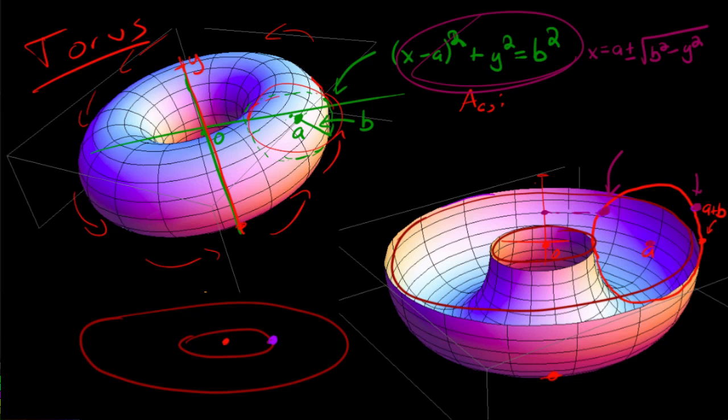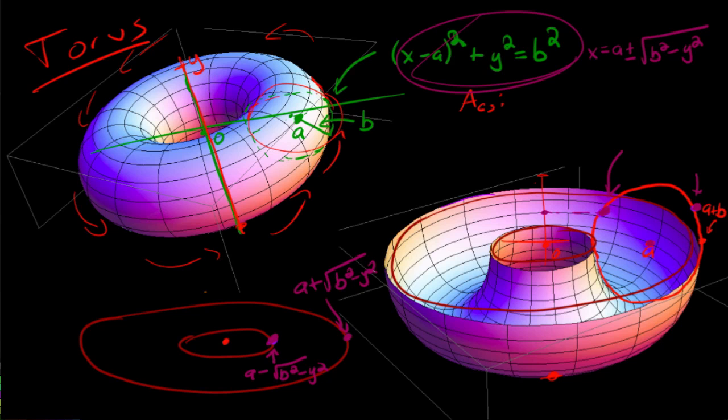And so this guy right here, this is a minus the square root of b squared minus y squared. And this point right there that's a plus the square root of b squared minus y squared. And notice that we're going to integrate from, this is negative b to positive b.